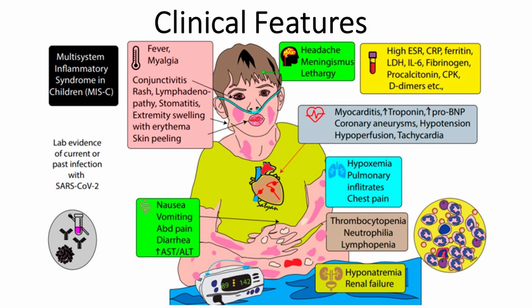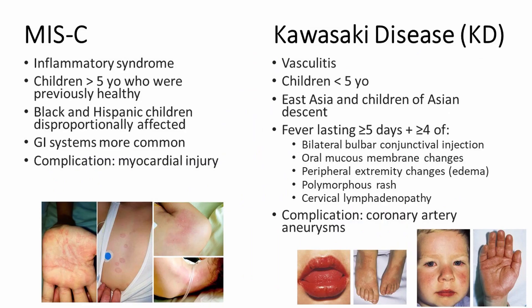Some of the most common presentations are persistent fevers with a median duration of four to six days, as well as GI symptoms of abdominal pain, vomiting, and diarrhea — these are the two most common presentations in children specifically. However, you can also see rash, conjunctivitis, mucous membrane involvement, neurocognitive symptoms such as headache, lethargy and confusion, respiratory symptoms, sore throat, myalgia, swollen hands and feet, and lymphadenopathy.